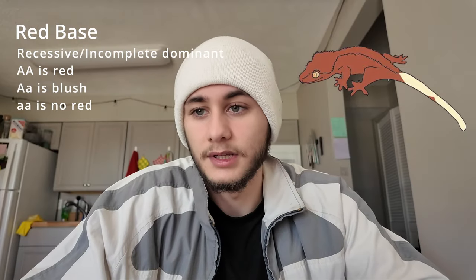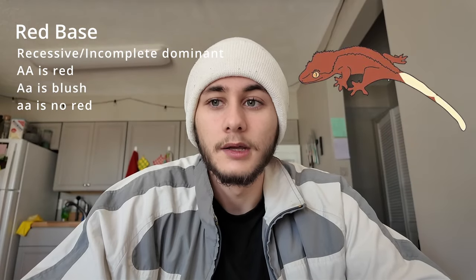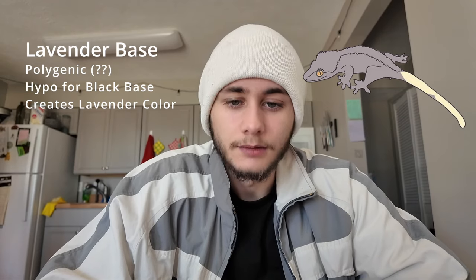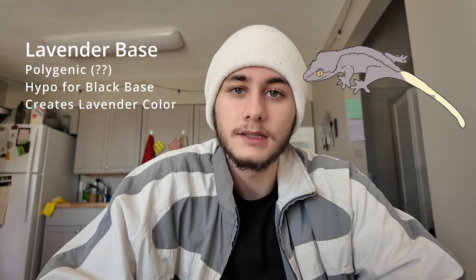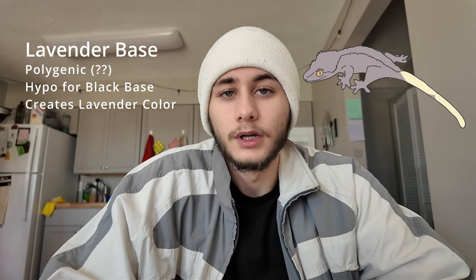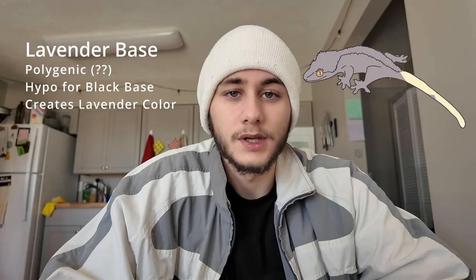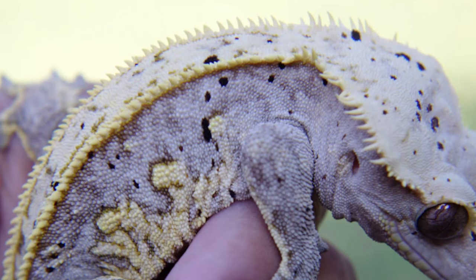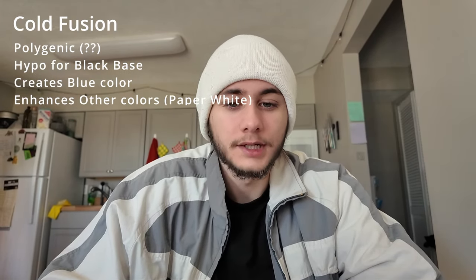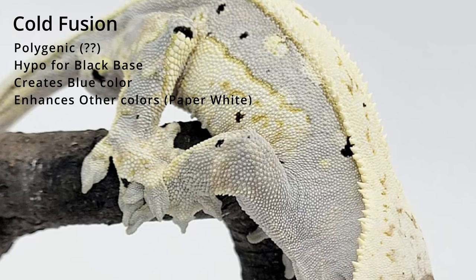The red base is recessive but incomplete dominant: big A/big A is red, big A/small A is a blush on the neck, and small A/small A is no mutation. Olive is also polygenic and gives a green body color. Lavender is polygenic and hypomelanistic — expressing less pigmentation than the wild type (the black base). If you fire up a supposed lavender and it shows black, it's not a lavender, because lavenders fire up lavender or gray. Charcoal is polygenic — basically a dark base phantom, sometimes with fringing or a white belly. Cold fusion is also polygenic and hypomelanistic, giving crested geckos a bluish color.